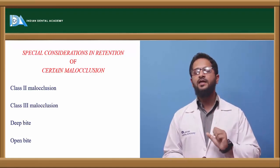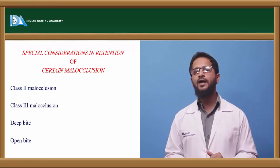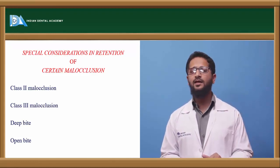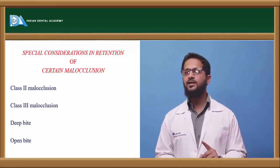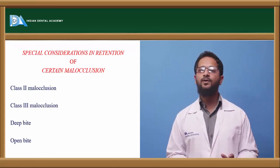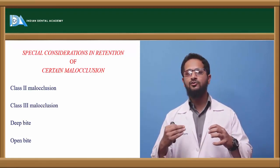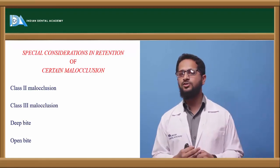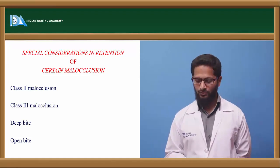Relapse following open bite correction can occur by two mechanisms: intrusion of the anteriors, or supra-eruption of the posteriors. Intrusion of anteriors can occur if the child continues abnormal habits like thumb sucking or lip biting, so these habits must be intercepted. To prevent supra-eruption of posteriors, high-pull headgear is used to prevent posterior teeth from supra-erupting. A posterior bite plate can also be used to prevent supra-eruption of posteriors.